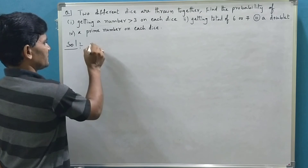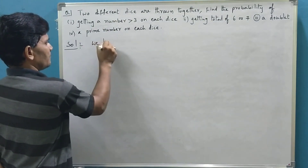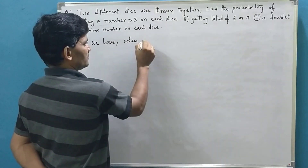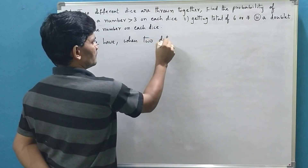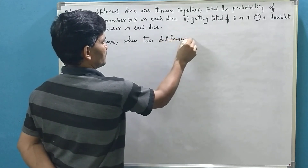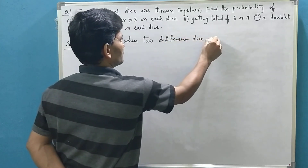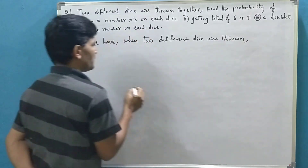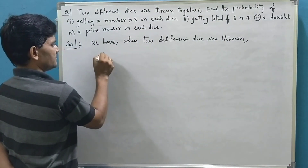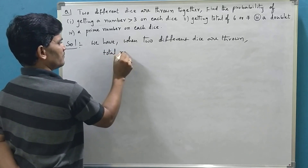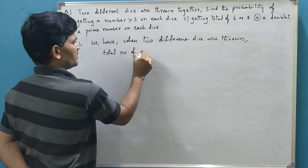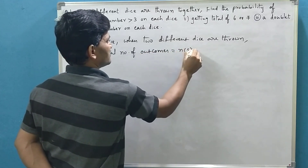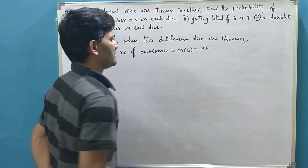As we know, when two different dice are thrown, the total number of outcomes is equal to 36 — that is 6 squared equals 36.